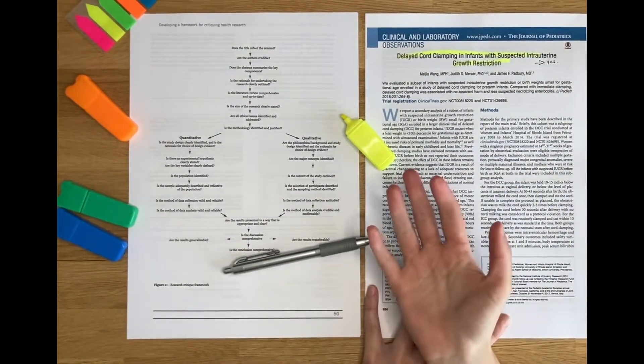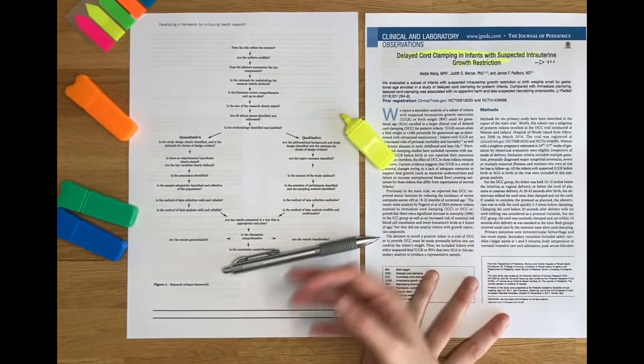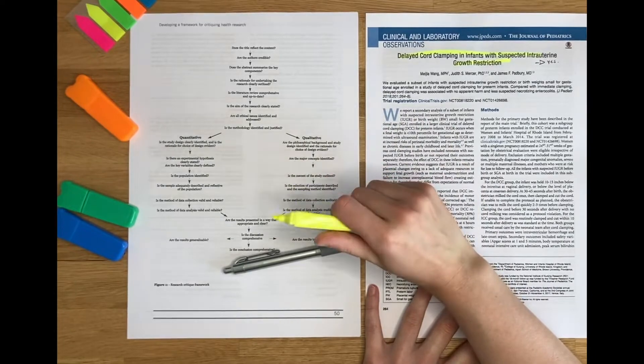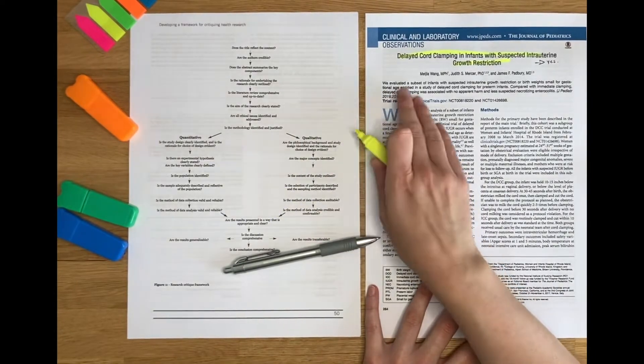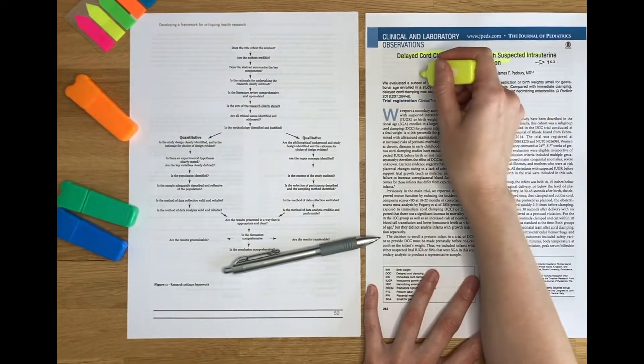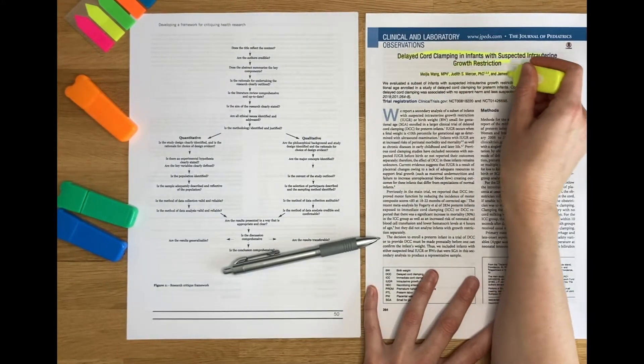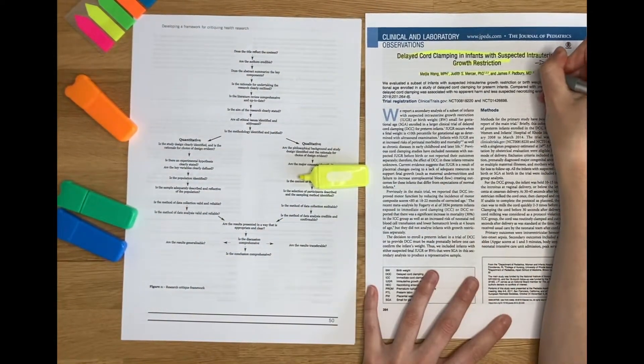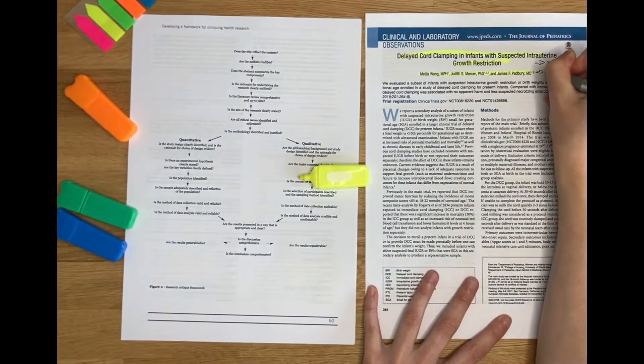Now I can move my way down the framework. I can say, are the authors credible? So I will often find information about the authors at the top of the paper. And I can see here it's under the title. I'm going to highlight that. And I'm going to label this so I know what it is and why I highlighted it. So I'm going to say authors.